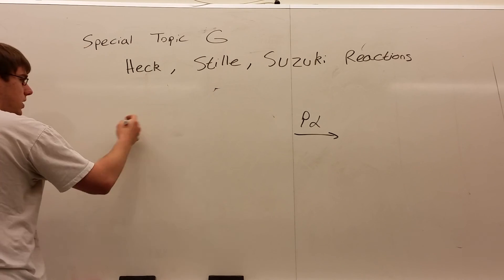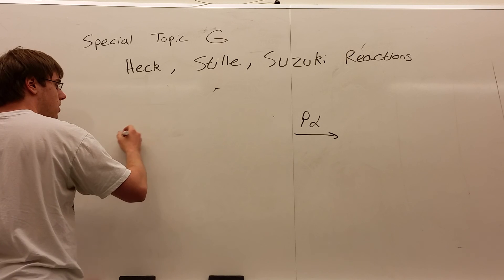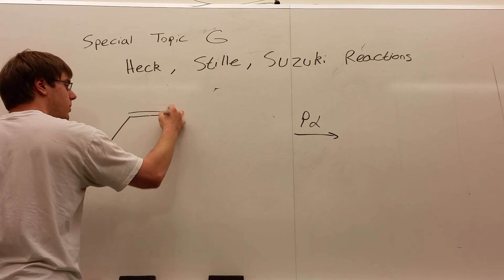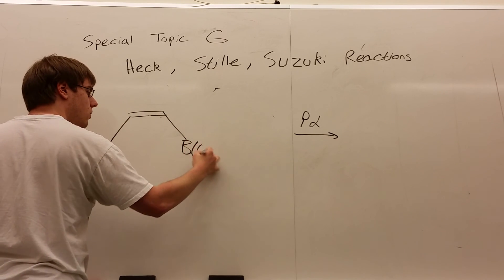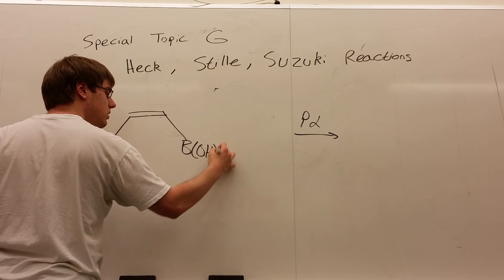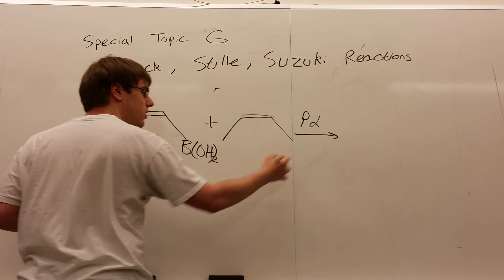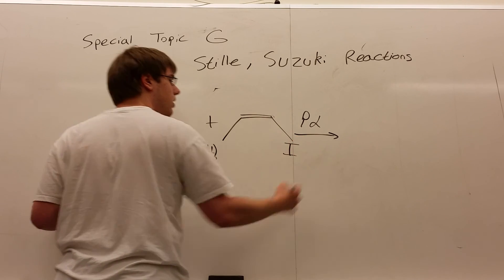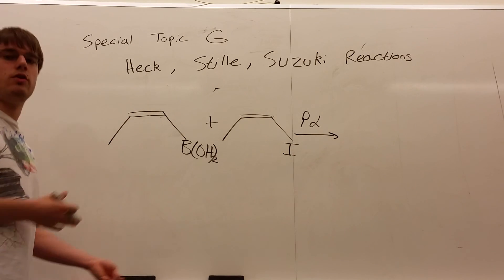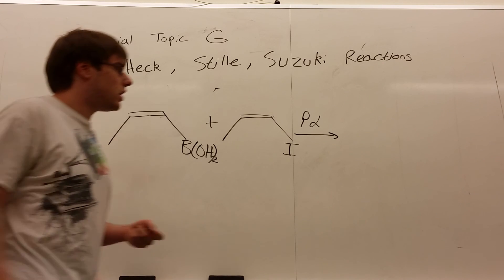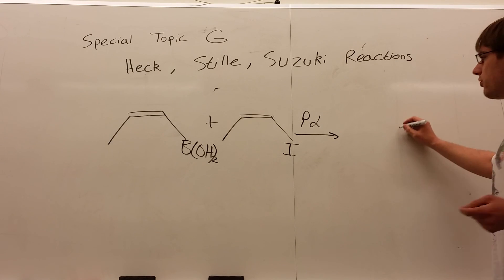So try this. We give you some palladium catalysts over the arrow, and we give you a double bond that looks like this, B(OH)2, and plus another cis double bond with iodine on it. Pause the video if you want to try and figure it out for yourself. If not, do what I was doing before.